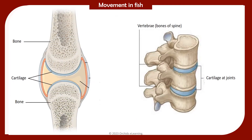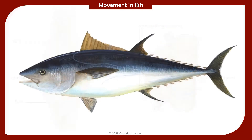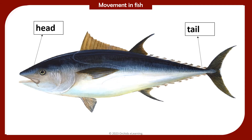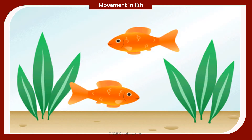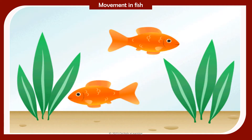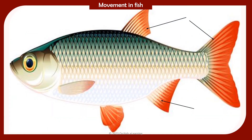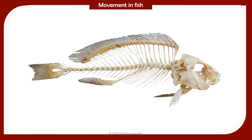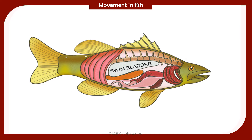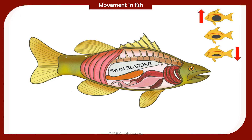Movement in fish: Fish are vertebrates. All vertebrates have an internal skeleton made up of bones, a tough elastic substance called cartilage, or both. Most fish have a streamlined body — the head and tail are narrow while the middle portion is broader. This shape offers the least resistance to the flow of water and makes it easier for them to swim. Fish have fins and a flexible backbone which help them to swim. Most fish also have a special structure called a swim bladder that can be filled with air or emptied to help them move up and down in the water.